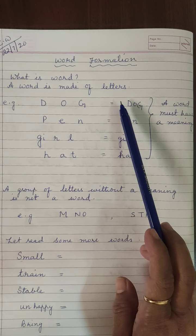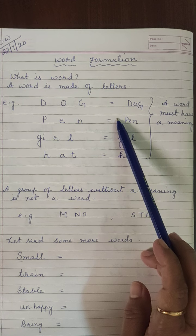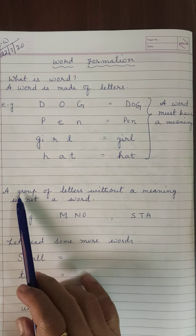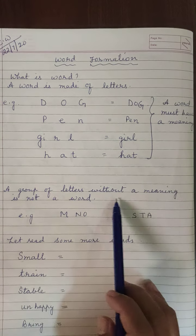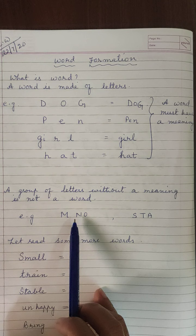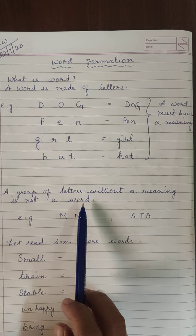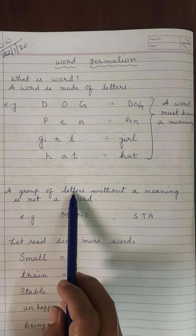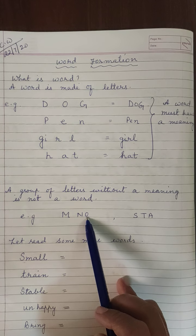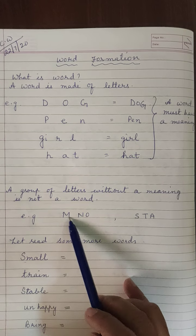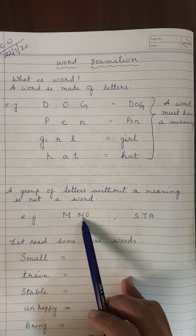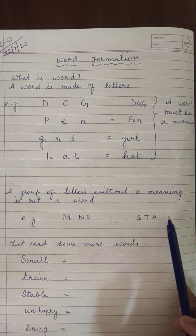A word is made of letters which have a meaning — only then we say that it is a word. A group of letters without a meaning is not a word. Many letters may be there, but if there is no meaningful formation, then it is not considered a word. For example, M and O — you cannot make any meaningful word, so it is not a word because it doesn't have any meaning.